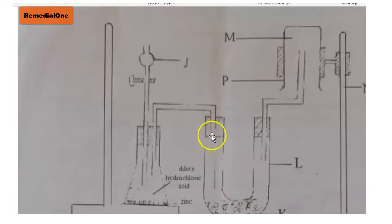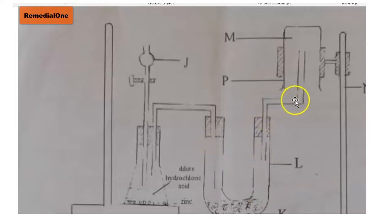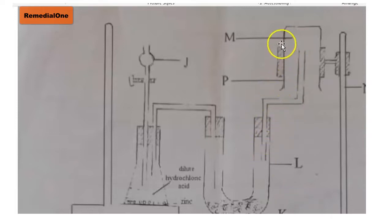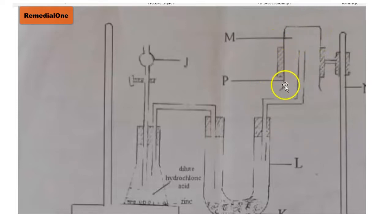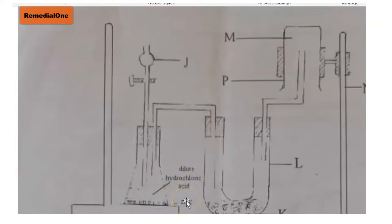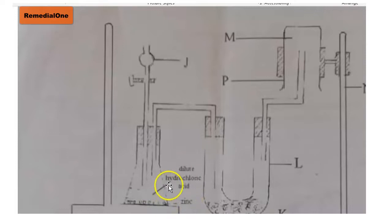The function of P — the gas jar — is that it is used to collect the gas, which is hydrogen gas. The reaction here is between dilute hydrochloric acid and zinc metal. Generally, any time a mineral acid reacts with a reactive metal like zinc, the gas produced is always hydrogen gas, and for that reason the gas here is hydrogen gas.